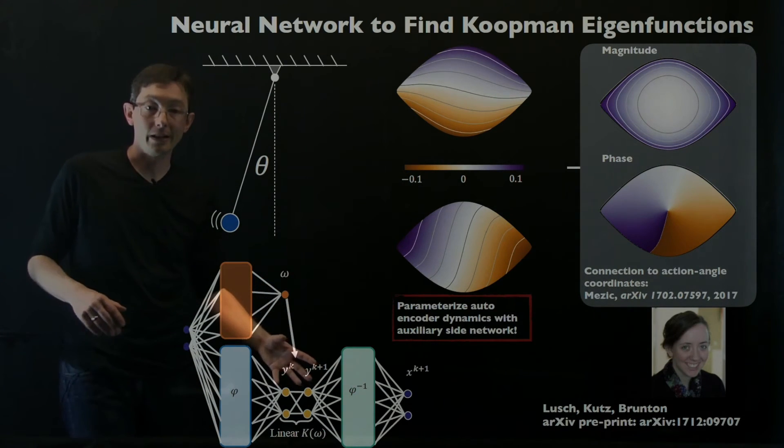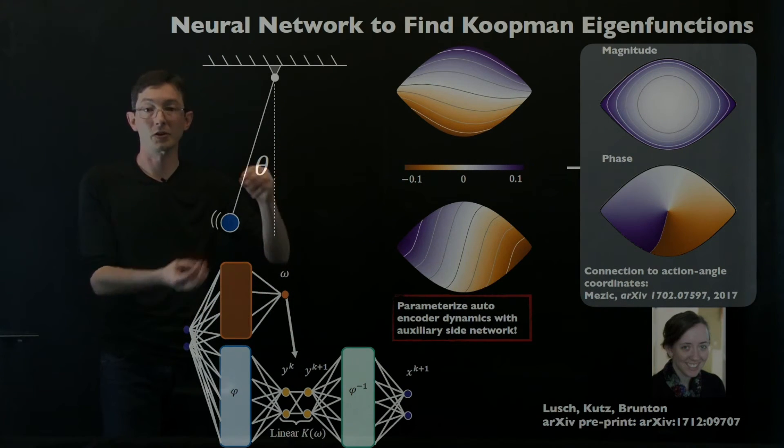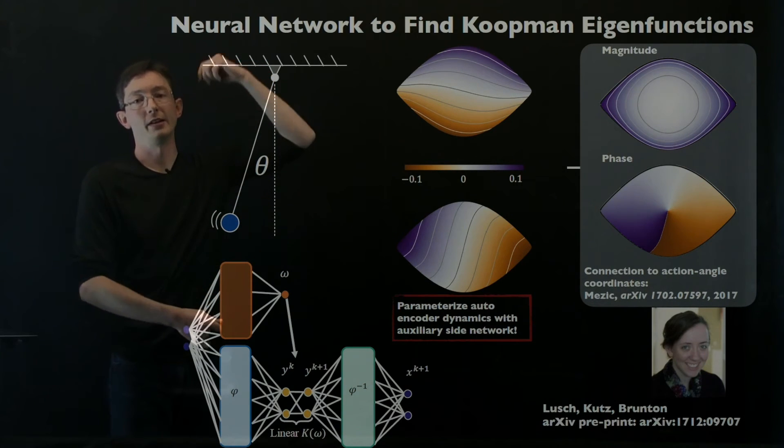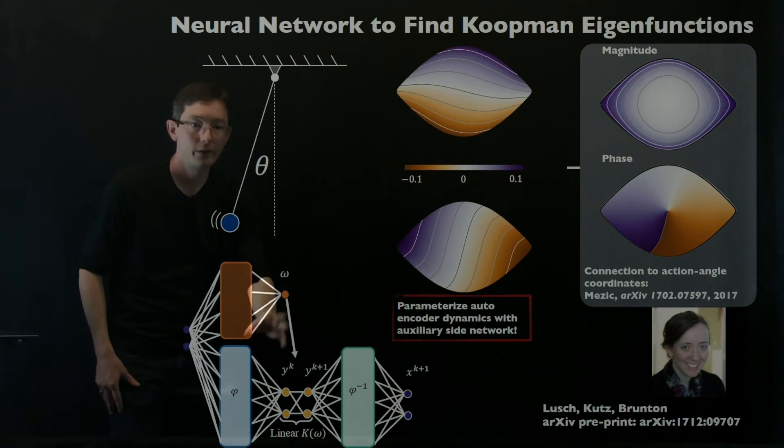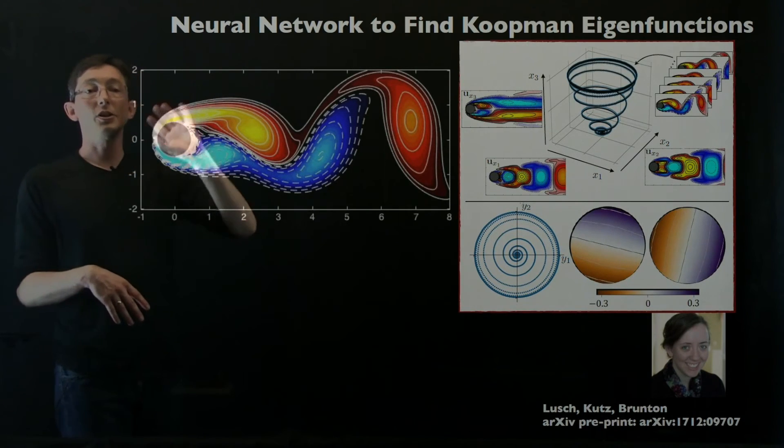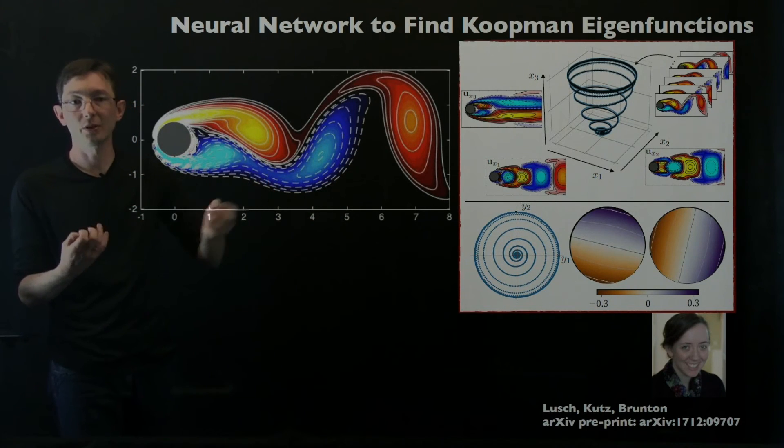Again, it all relies on this auxiliary network of parametrizing this or else we wouldn't have been able to get two eigenfunctions. We would have had all of these harmonics plus or minus two i omega plus or minus three i omega four. All of those harmonics would have been necessary here.